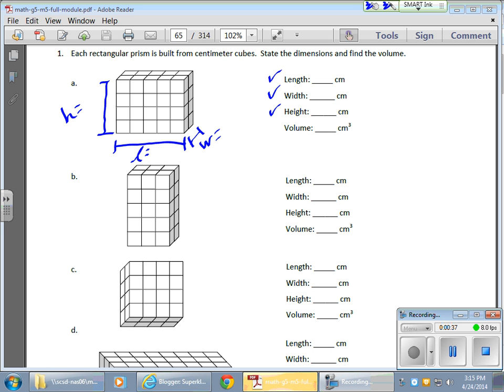Okay, and everything's in centimeters for this particular problem. So 1, 2, 3, 4, 5, I have 5 centimeters as my length. 1, 2, I have 2 centimeters as my width. And I have 1, 2, 3, 4 centimeters as my height.